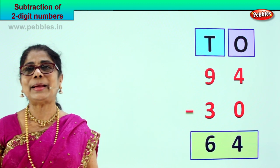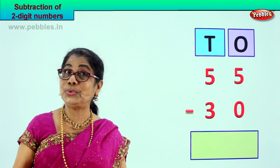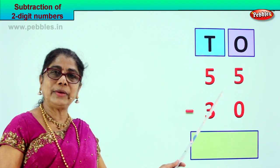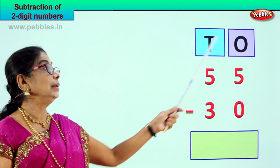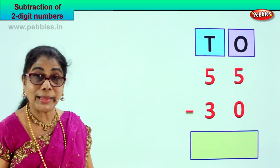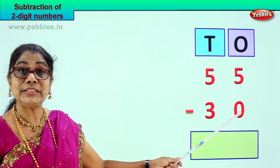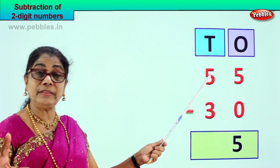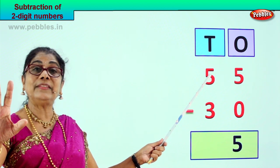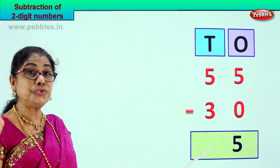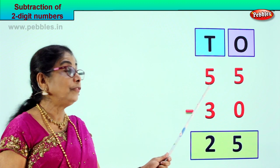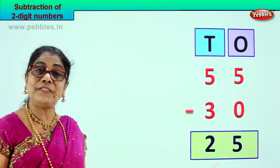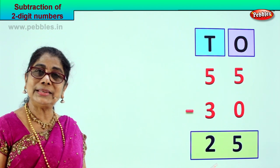Let us take another sum and enjoy doing two digit subtraction. 55 minus 30 — five tens, five ones, three tens, zero ones. Go to the ones please: five take away zero is five itself. Tens place: five minus three — one, two, three — your answer is two. Your answer is 25. 55 take away 30 gives you the answer 25. Did you enjoy doing two digit subtraction?